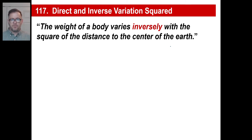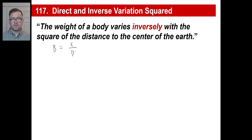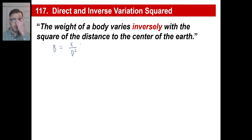The weight of a body varies inversely with the square of the distance to the center of the earth. So if it varied just with the distance, it'd be K over D. But if it says it varies inversely with the square of the distance, we just put a square there. That's it. No big deal. You just fill in the blanks, work out the numbers, and solve what they ask you to solve.